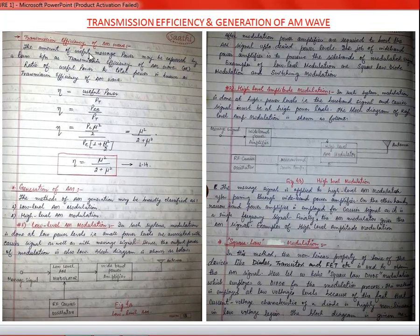Transmission efficiency is the amount of useful message power, defined as the ratio of useful power to total power. It is denoted by η. Since sidebands contain the message (the μ part), useful power equals sideband power. Substituting the values of sideband power and total power, transmission efficiency η = μ² / (2 + μ²).